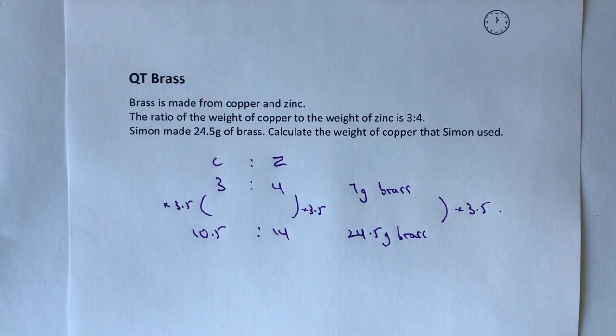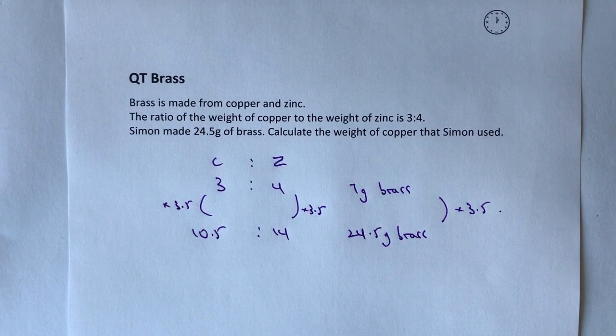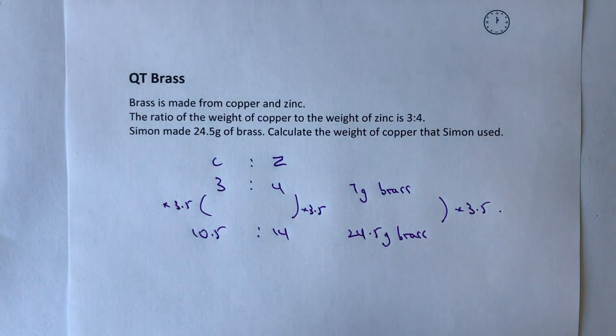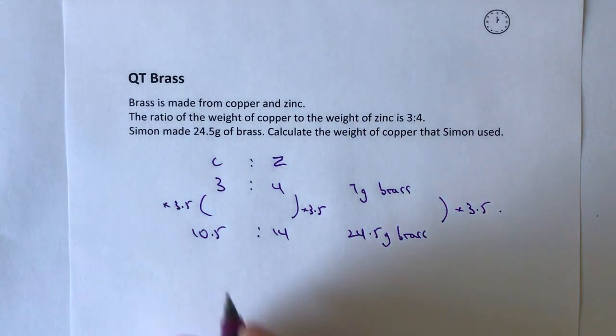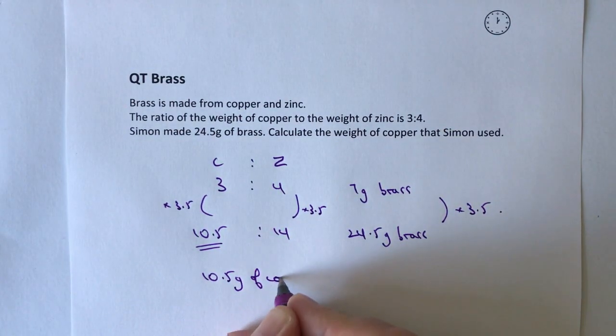So to answer this particular question, it's a really straightforward question once you lay it out in this way, is that the weight of copper will be 10.5 grams of copper.